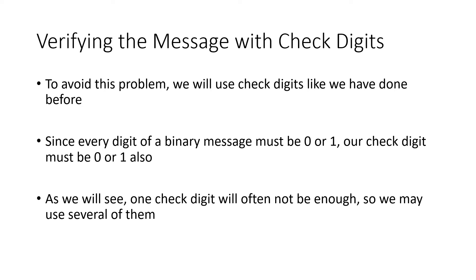What we want to try to do is allow the lander to be able to detect and maybe even correct possible errors in these messages that it's receiving. And one of the ways that we can do that is with check digits. Now, every digit of our message is either a 0 or a 1, which means the check digit also has to be 0 or 1. But that's not very many possibilities for that check digit. So as we'll see, one check digit will often not be enough, and we may end up using several of them.